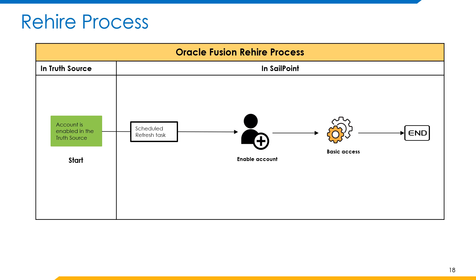The Rehire process starts by enabling the account in the truth source application. That is then updated in SailPoint through a scheduled aggregation task. Through a scheduled refresh identity cube task, the account enable process for Oracle Fusion application gets triggered. As part of the rehire or enable account process, a new assignment is created for that account with an assignment name and assignment number appended with R. Basic access will be assigned to the enabled account, as in the create account use case.